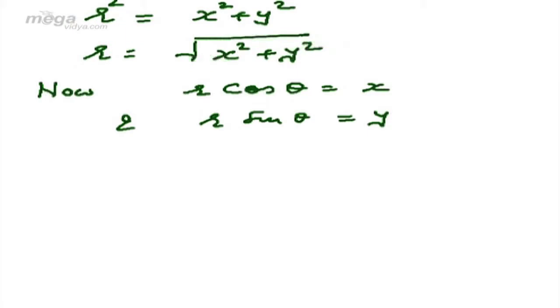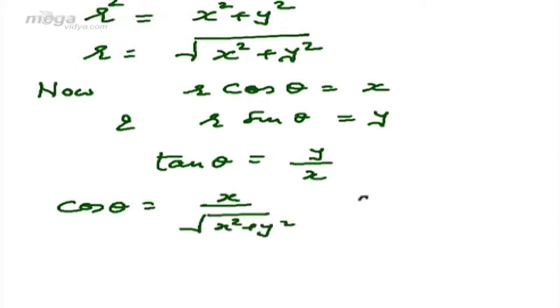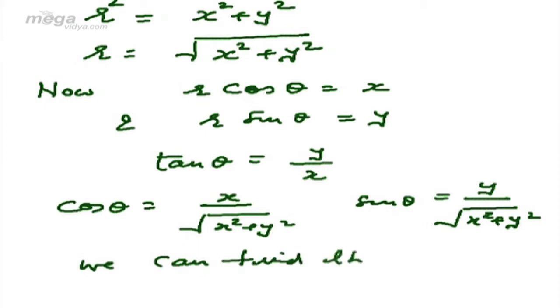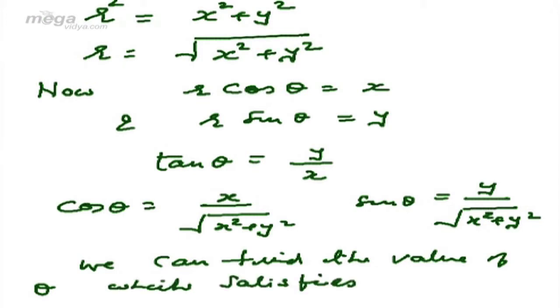From r cos theta equals x and r sine theta equals y, if we divide the second equation by the first, we get tan theta equals y by x. We can also get cos theta equals x over the square root of x squared plus y squared, and sine theta equals y over the square root of x squared plus y squared. From these three equations, we can find the value of theta that satisfies at least two of the three equations.